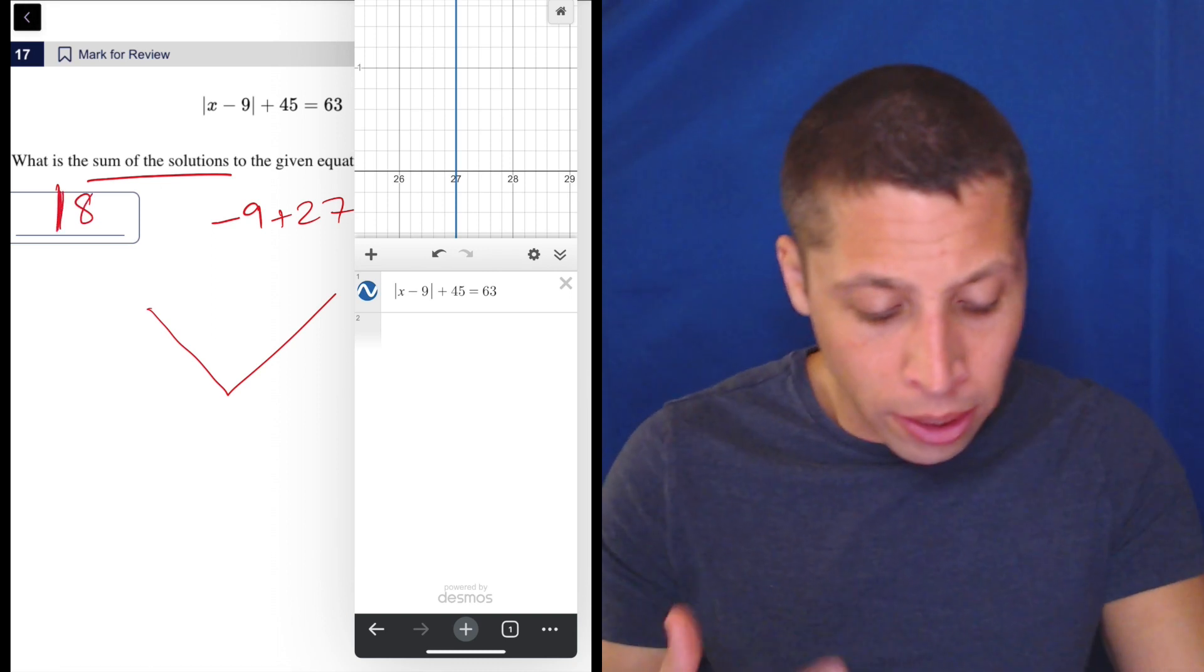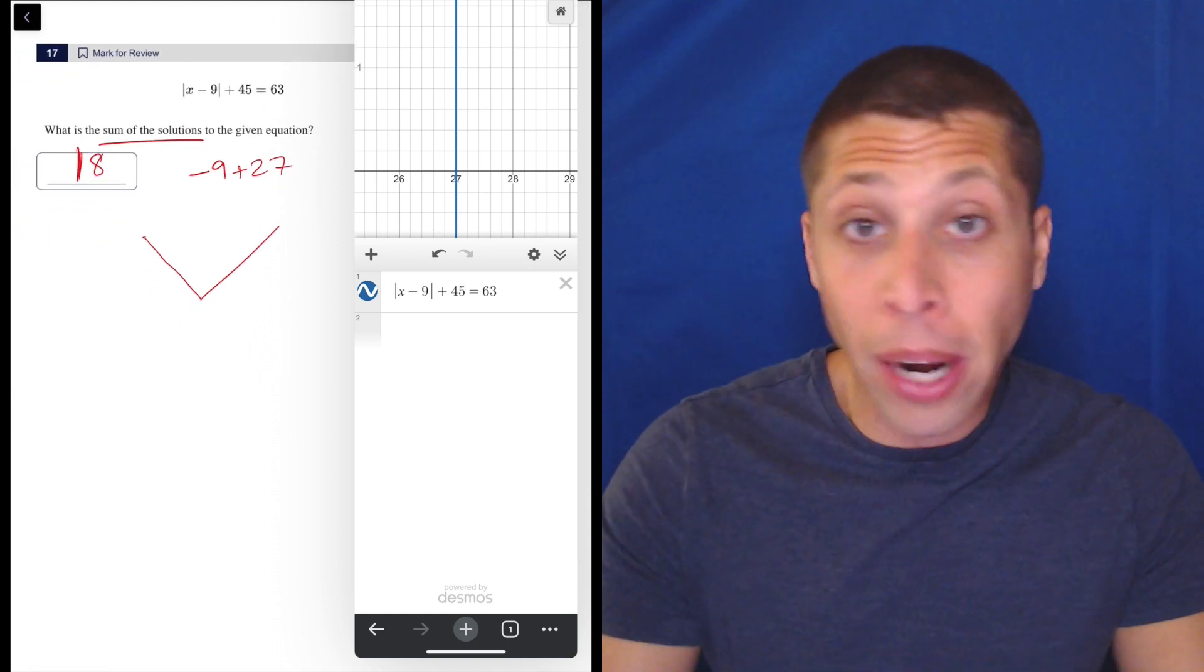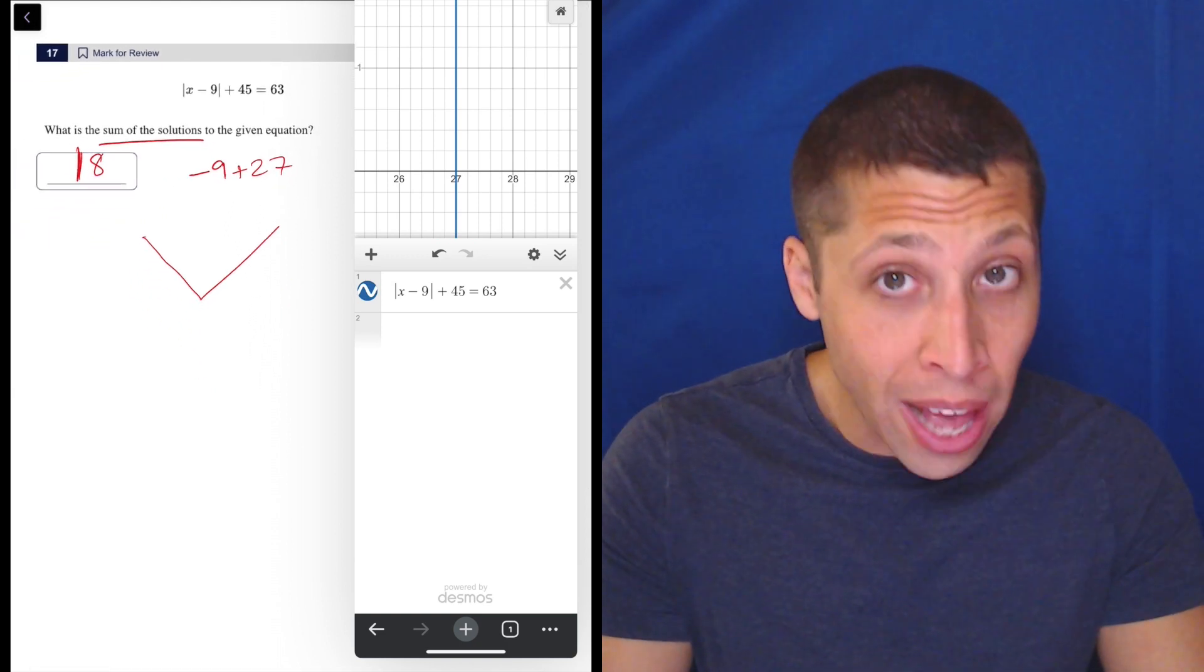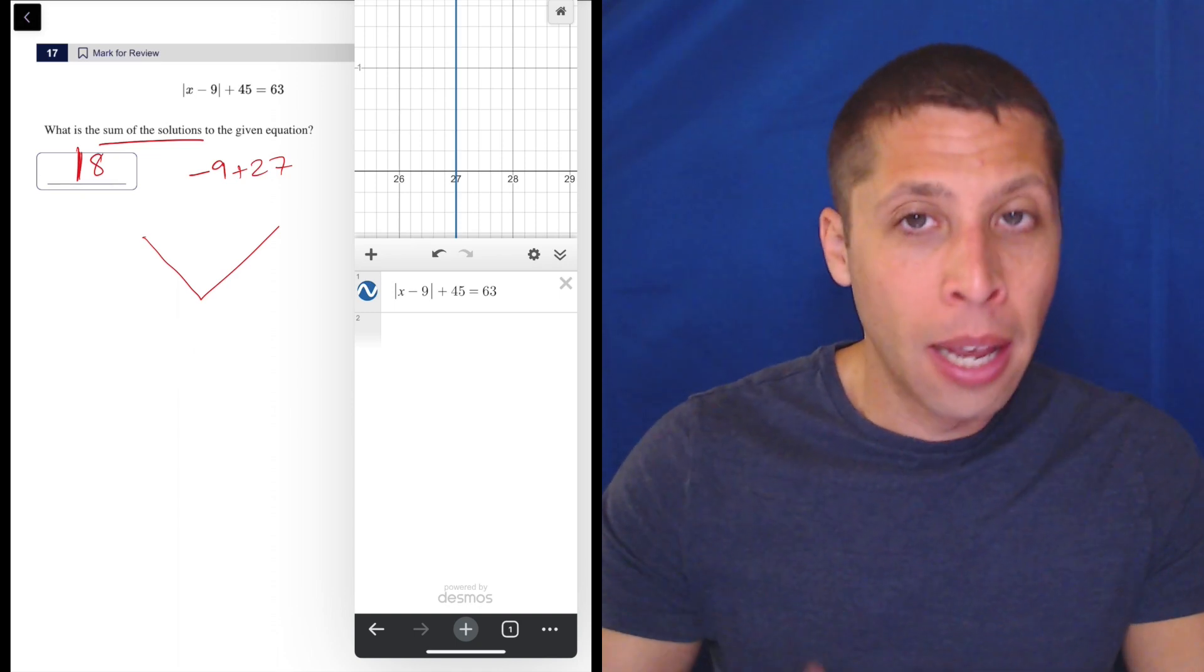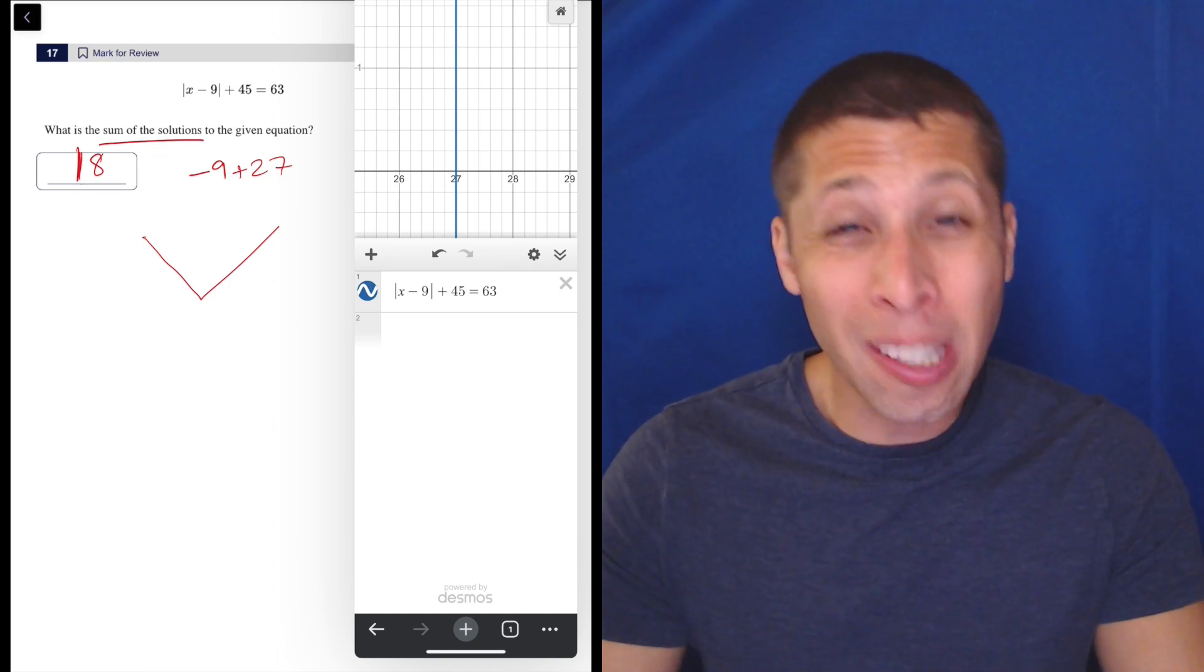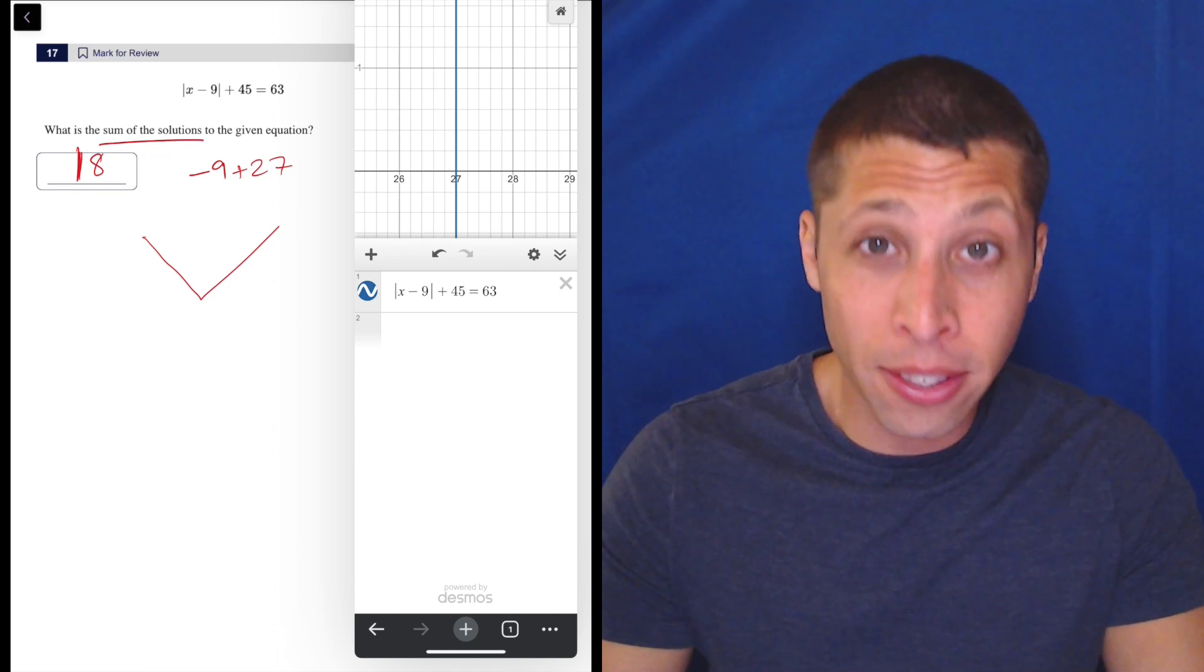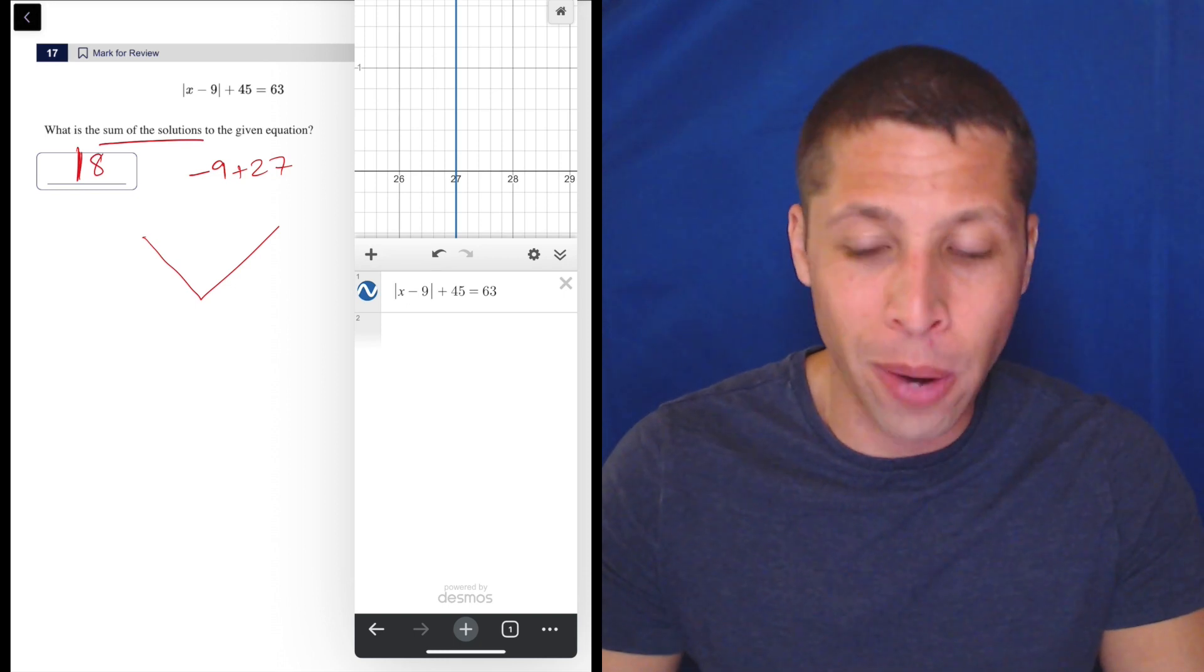So again, I wouldn't have bothered here to solve it algebraically. I can show you how to do that, because maybe there will be a situation where you can't put it in Desmos. But we're at question 17 out of 22. We know they're getting hard. At this point, you might also know what your timing situation is. So especially if you get a lot of time, you could do it the hard way. You could do it the long way.